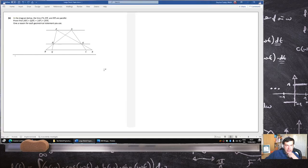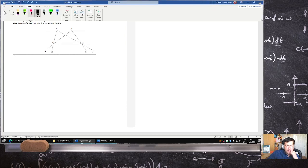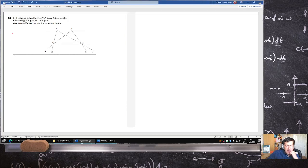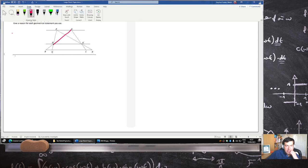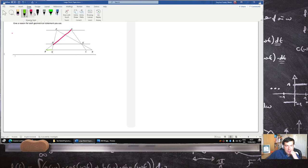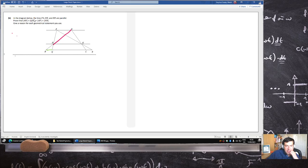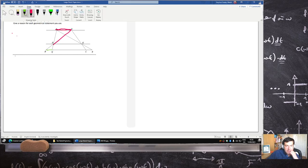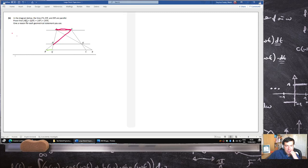So for the next part, we want to prove that AH multiplied by QB is the same as AP multiplied by HB.